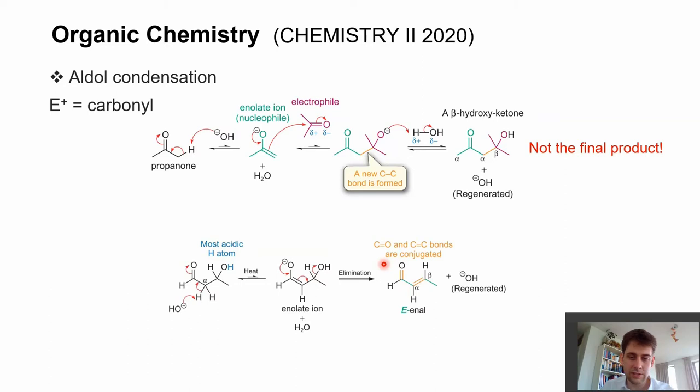And you also often call these alpha-beta-unsaturated carbonyl components. And here, in this case, the carbonyl component and the carbon-carbon bond are now conjugated in a way. So if you see something like this, like conjugated carbonyl and conjugated carbon-carbon bond, then always think about what could be the aldol condensation that happened here.